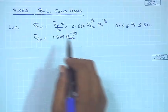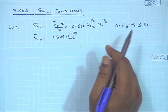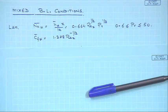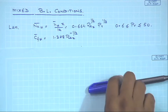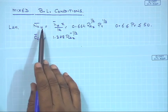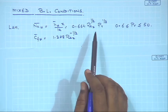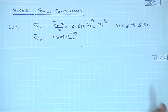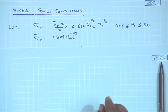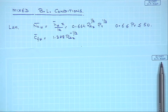We are going to look at what is a mixed boundary layer — meaning that in real situations a boundary layer should always start as laminar, and after crossing a certain value of Reynolds number, which we take to be equal to 5×10⁵, it changes from laminar to turbulent.